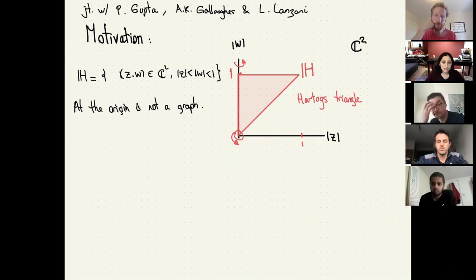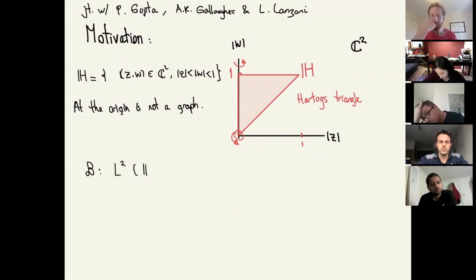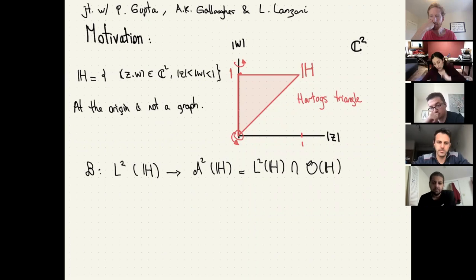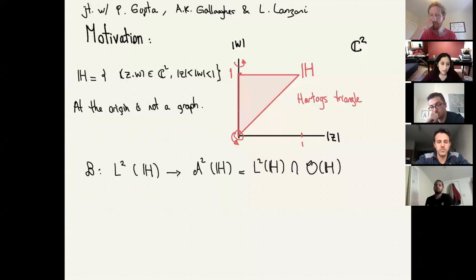The motivation we're looking at here involves different functional spaces. One thing the Hartogs Triangle has recently come to light on is the Bergman projection. The Bergman projection takes all L² functions on H and projects them to the holomorphic functions on H that are L². For strictly pseudoconvex domains with C-infinity boundary — domains with the most regularity properties — the Bergman projection has good regularity.